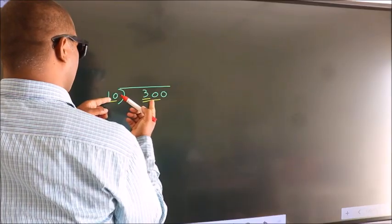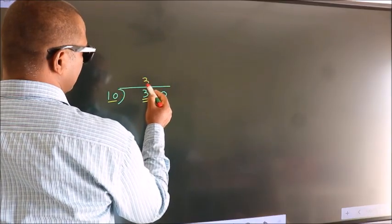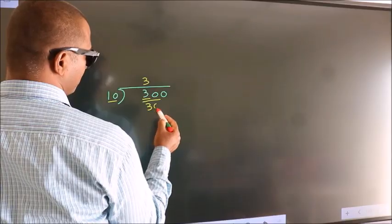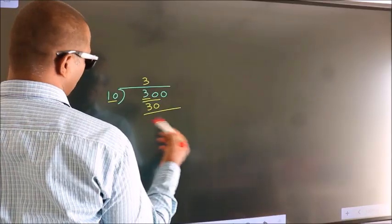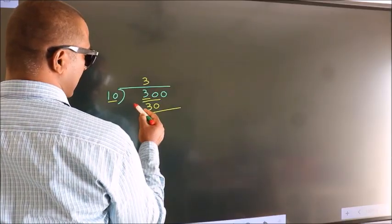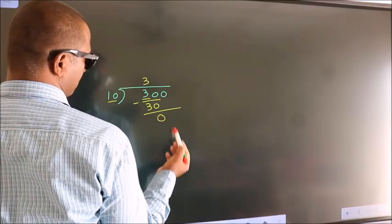In the 10 table. 10 threes, 30. Now we should subtract. We get 0.